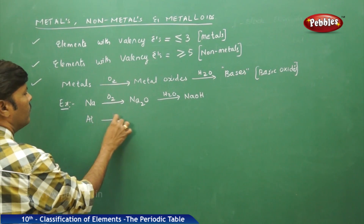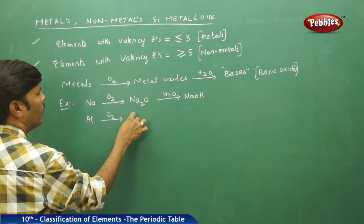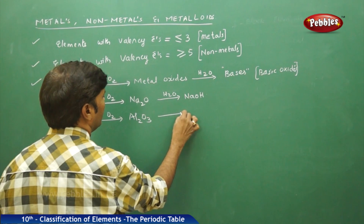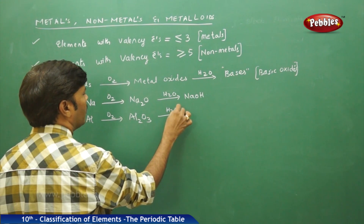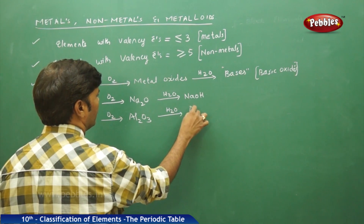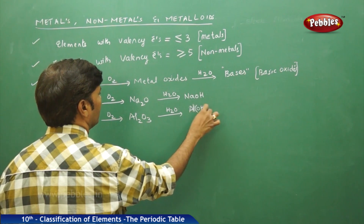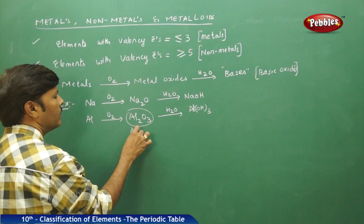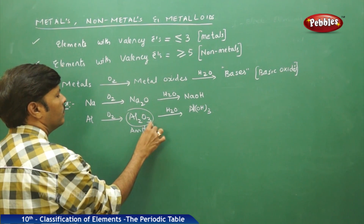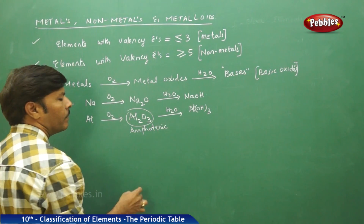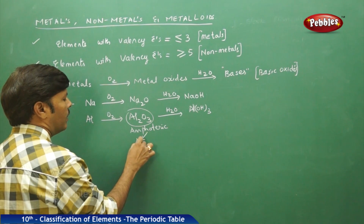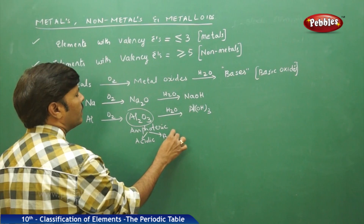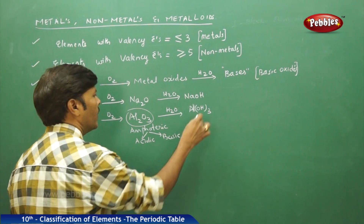We take aluminium — aluminium reacts with oxygen to form aluminium oxide. Aluminium oxide upon hydrolysis gives aluminium hydroxide. Aluminium, of course, is amphoteric — it can behave as both acidic and basic, so it is an exception.